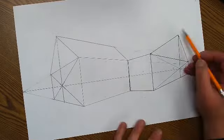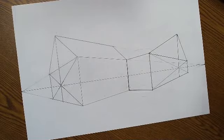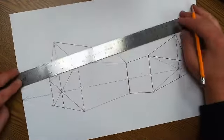So what vanishing point are we going to use to draw on the roof on our garage side? The right or the left? The left. The left, thank you.